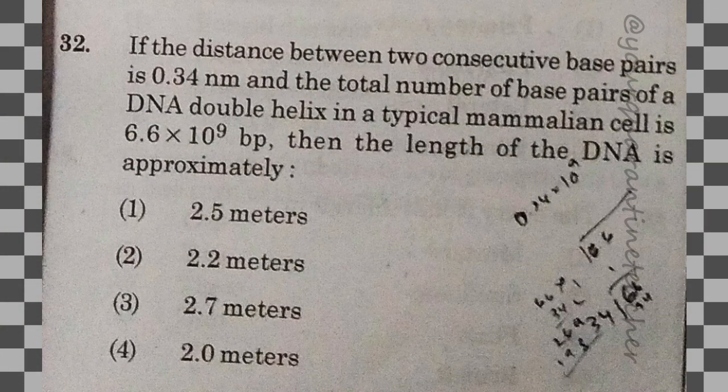32nd question — this is a direct NCERT question. If the distance between two consecutive base pairs is 0.34 nm, the answer is option 2 — 2 meters. It is a direct question.